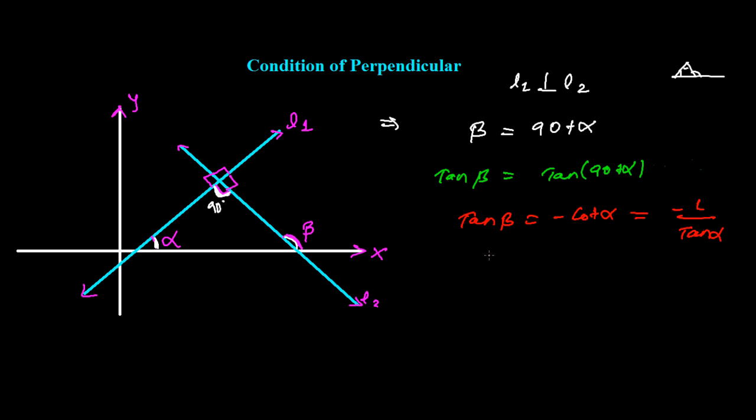So what we get finally: tan beta is equal with minus 1 over tan alpha. Now let's focus on this. What's beta? Beta is actually the inclination made by the second line, so tan of the inclination is the slope of the line L2. Let me represent by m2. And minus 1 over tan alpha - what's tan alpha? Alpha is actually the inclination made by the line L1, so that's the slope of the first line. Let me represent by m1.